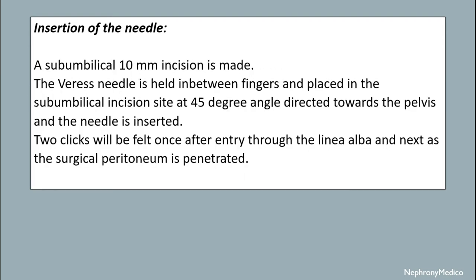Insertion of the Veress needle. A sub-umbilical 10 mm incision is made and the Veress needle is held between the fingers and placed at the sub-umbilical incision site at a 45 degree angle directed towards the pelvis, and the needle is inserted. Two clicks will be felt — once after entry through the linea alba and next as the peritoneum is penetrated.